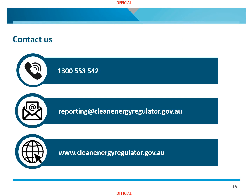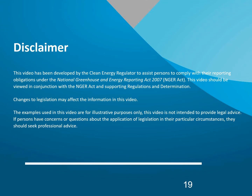For more information or help with reporting under the NGER scheme, please contact us by calling 1300 553 542, emailing reporting@cleanenergyregulator.gov.au, or visiting www.cleanenergyregulator.gov.au. This video has been developed by the Clean Energy Regulator to assist persons to comply with their reporting obligations under the NGER Act. It should be viewed in conjunction with the NGER Act and supporting regulations and determination, as changes to legislation may affect the information presented. The examples used are for illustrative purposes only, and this video is not intended to provide legal advice.